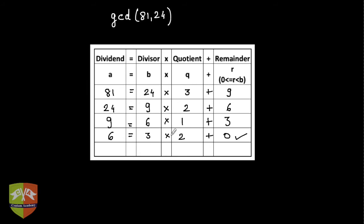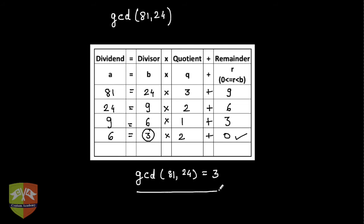Finally we ended up getting 0 as the remainder. So the GCD is whatever the value of b is at the step where we get 0 as remainder. So GCD of 81 and 24 is 3.